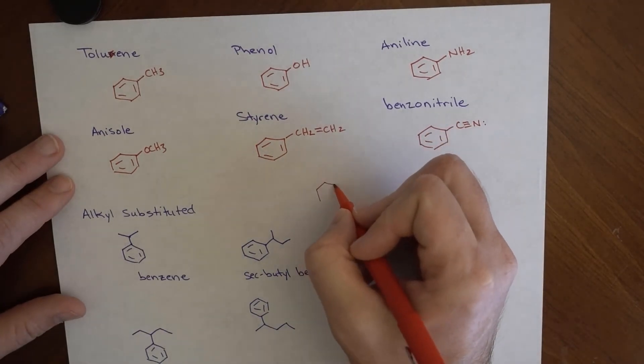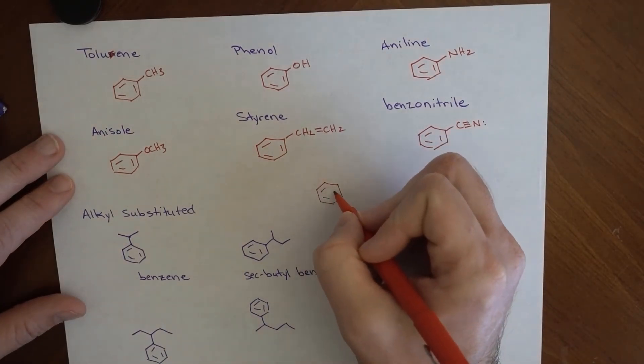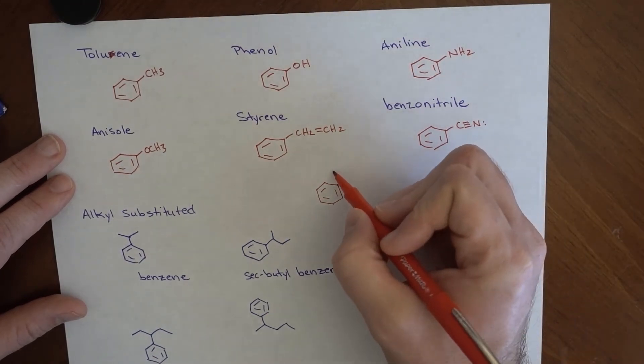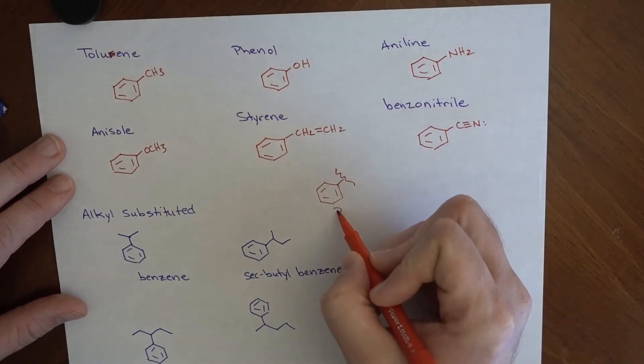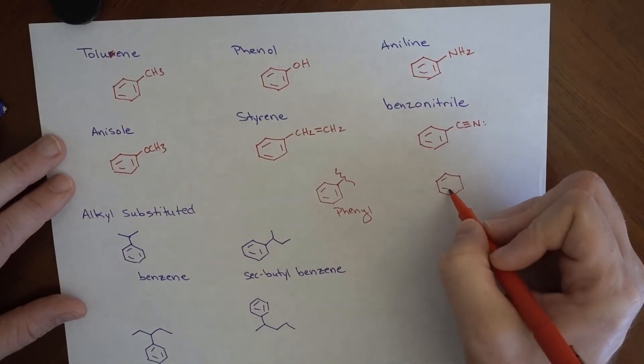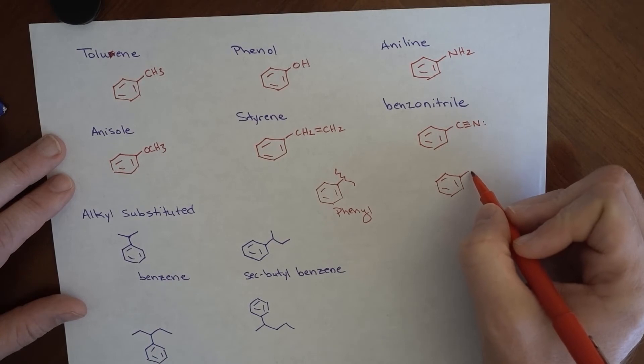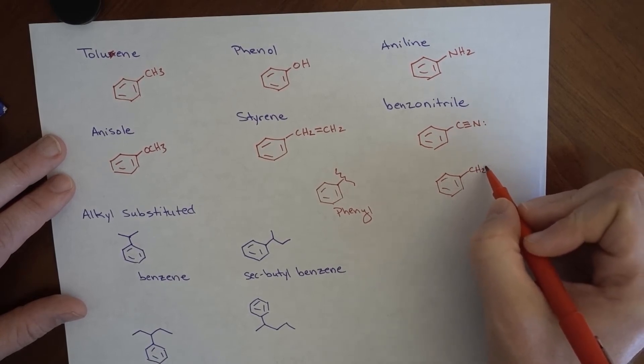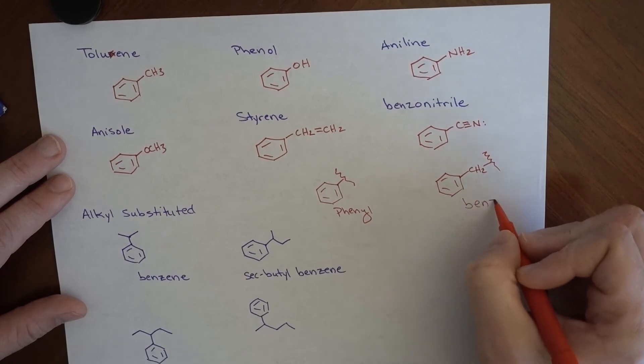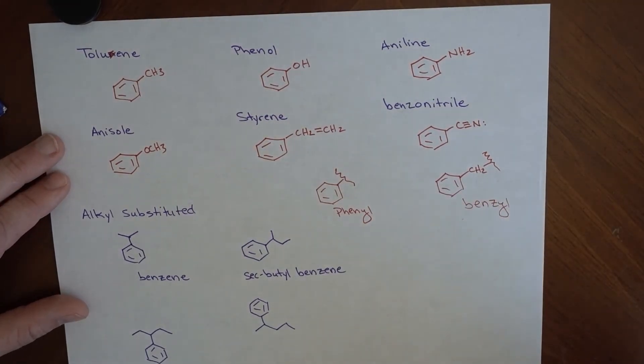Another thing for us to remember is that if this is going to be a group on another molecule, this is a phenyl group. So if we're attaching this to somewhere, this would be referred to as phenyl. And if we've got this sort of thing that's attached to something else, this is a benzyl group. Okay?